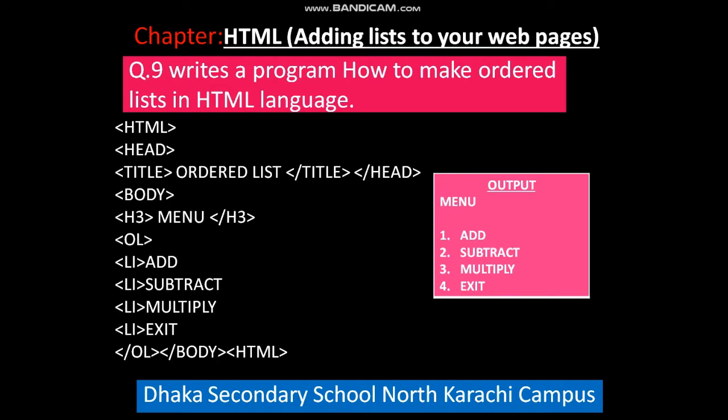The output is the ordered list with numbers 1, 2, 3, and 4 — showing: Add, Subtract, Multiply, and Exit.